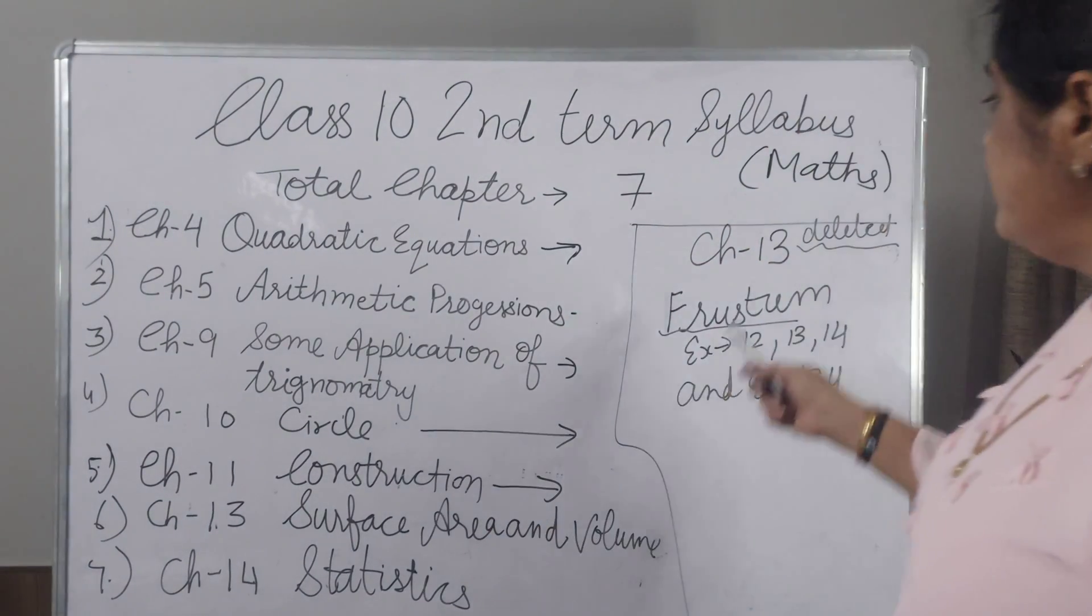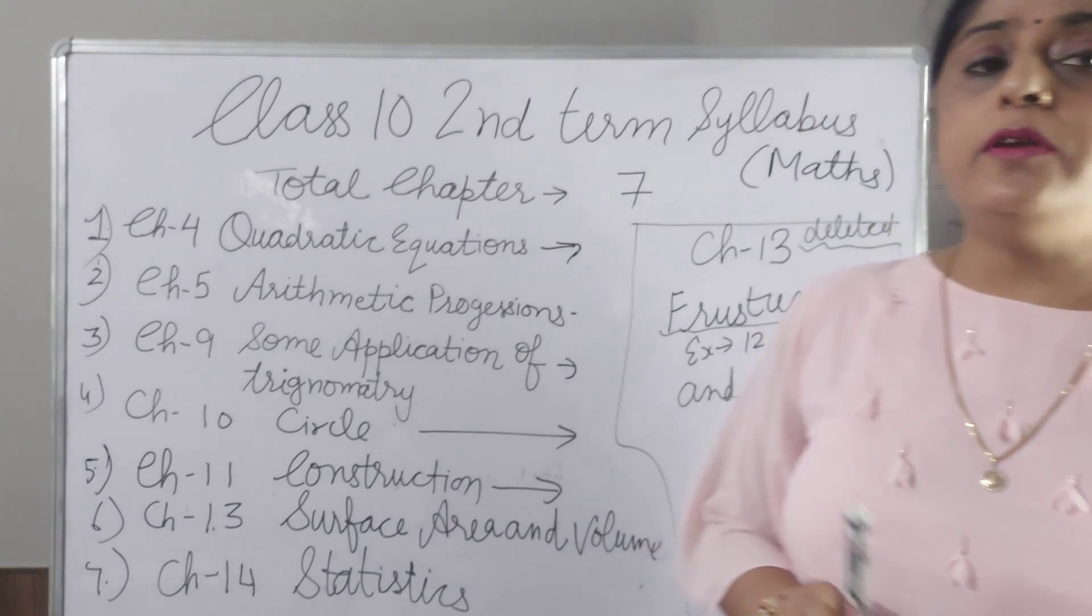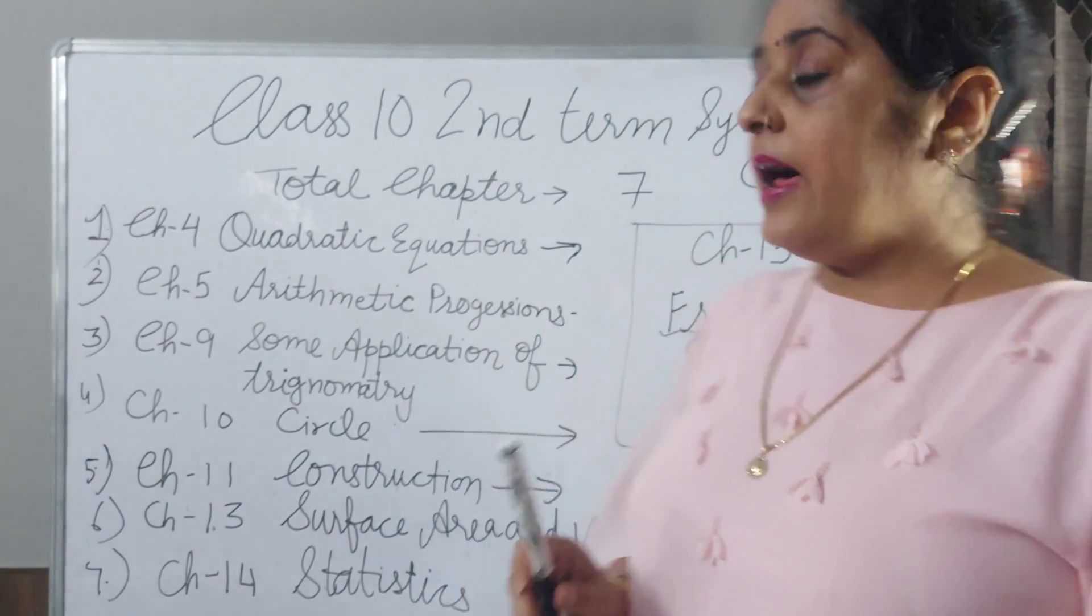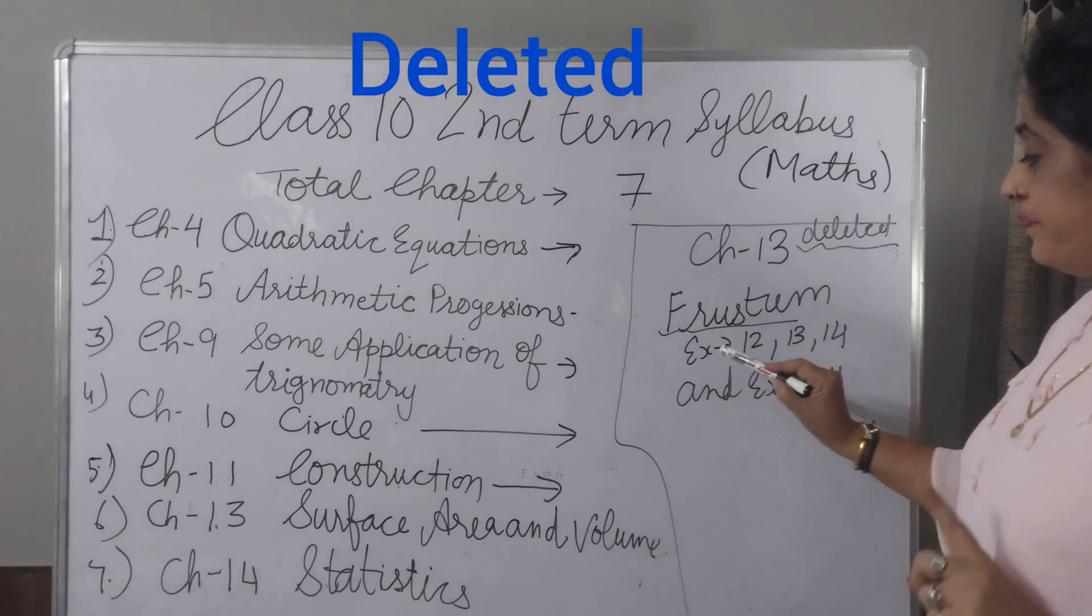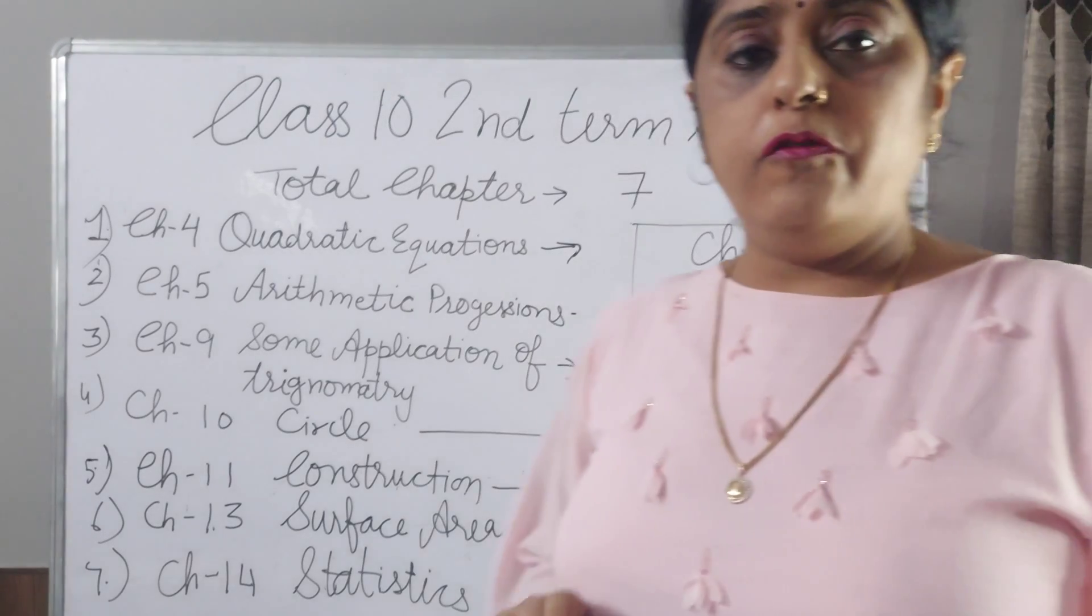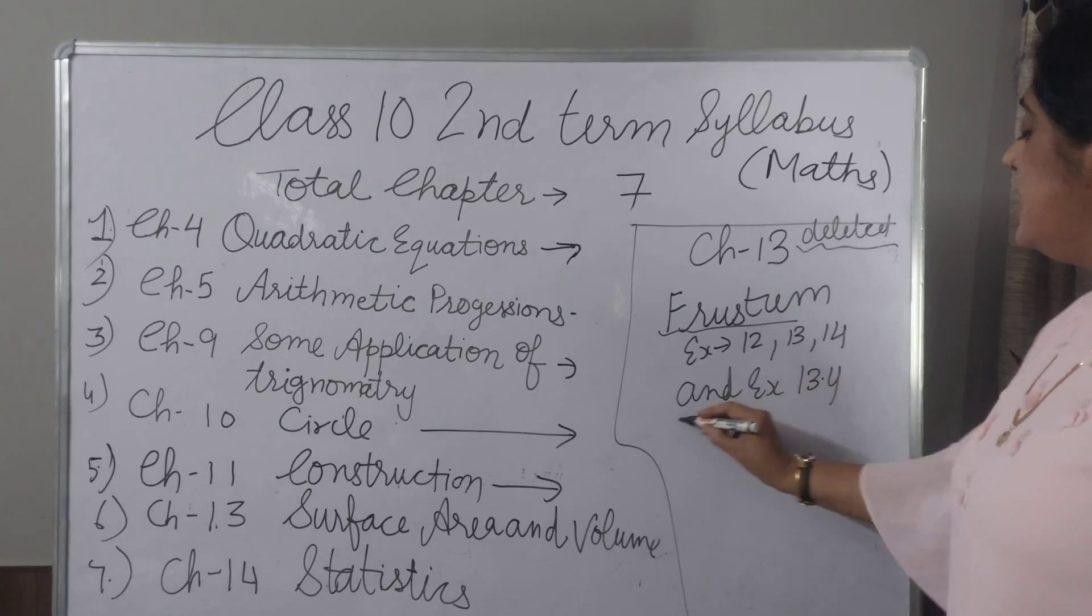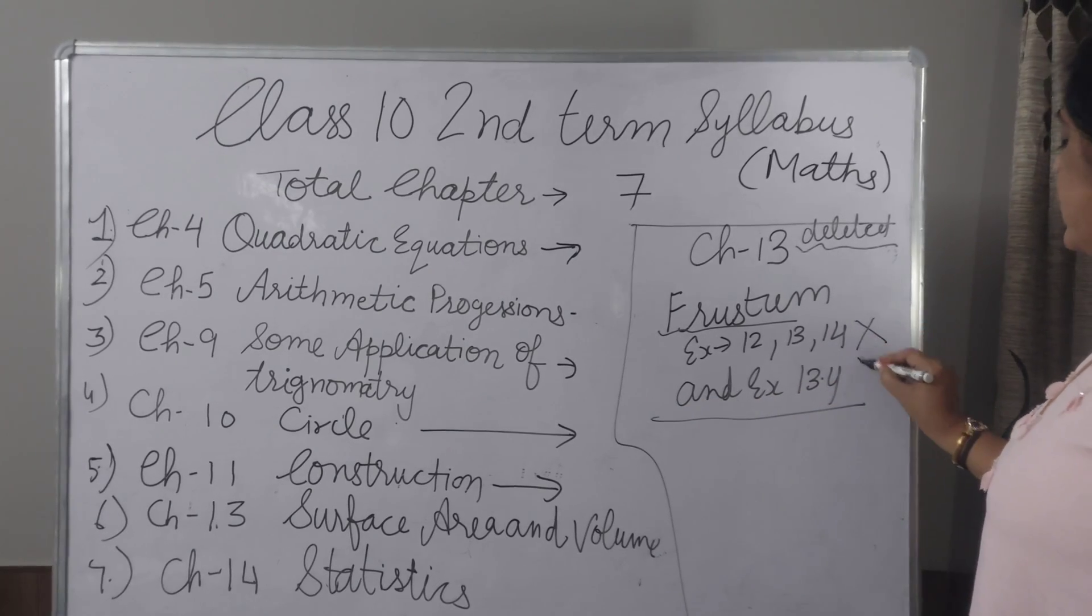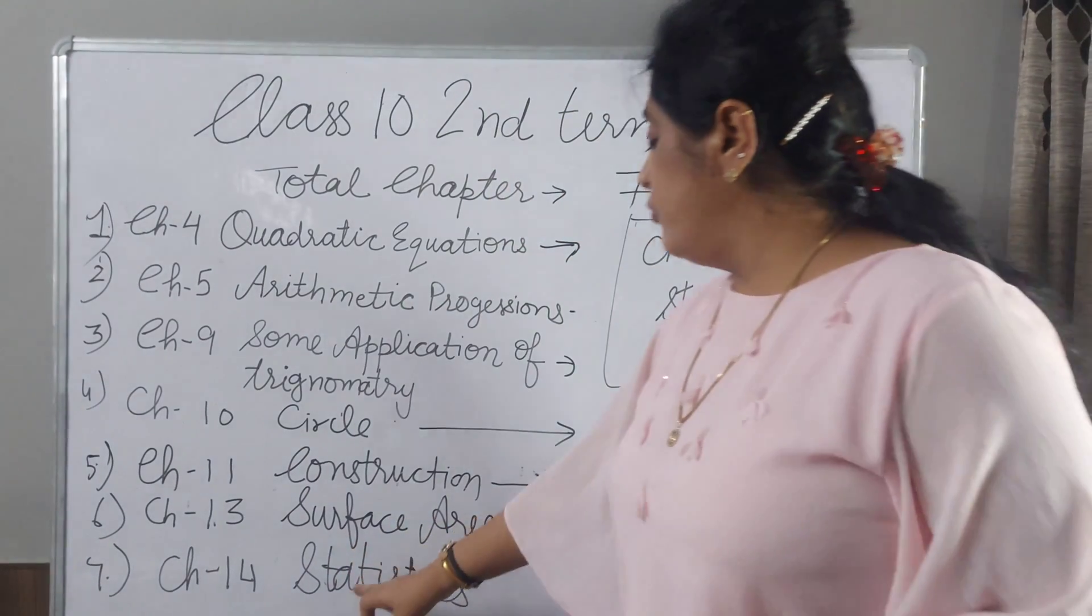And from Chapter 13, Chapter 13 is surface area and volume. In this chapter only frustum sums are deleted. I have written here deleted. Note down. Frustum example number 12, 13 and 14 are deleted. And exercise 13.4 that is deleted from your syllabus.